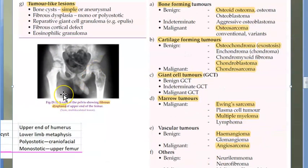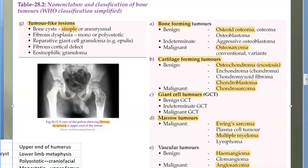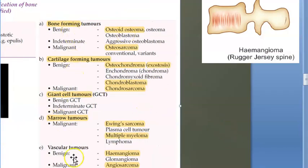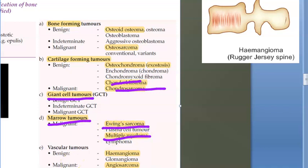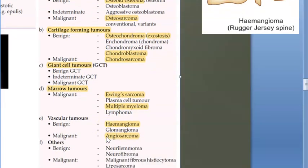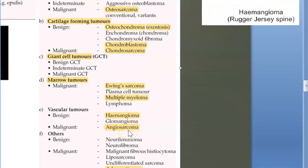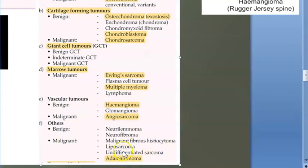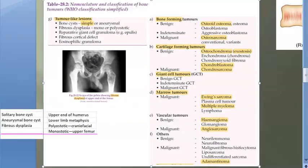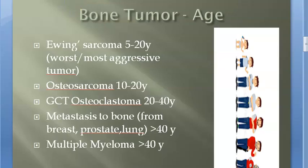To summarize the tissue-of-origin classification: bone forming includes osteoid osteoma and osteosarcoma; cartilage forming includes chondroblastoma and chondrosarcoma; giant cell tumors can be benign or malignant; marrow tumors include multiple myeloma, Ewing's sarcoma, and lymphoma; vascular tumors include hemangioma becoming angiosarcoma; other tumors include adamantinoma.